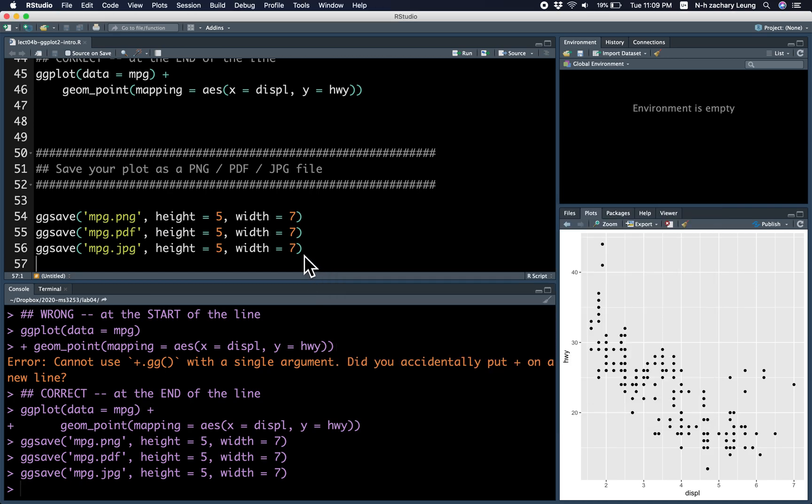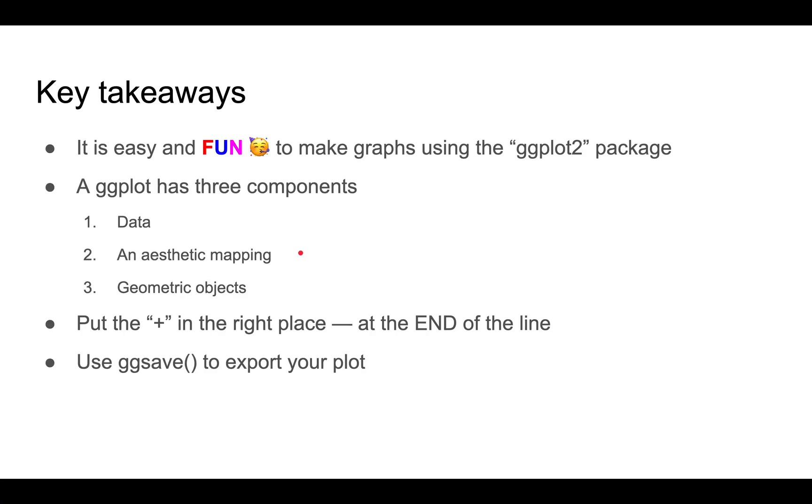All right. So to conclude, it's easy and fun. Well, I guess this part might be a little bit subjective, but I think it's pretty fun to make graphs using the ggplot2 package. And the ggplot has three components: the data, aesthetic mapping, and geometric objects. It's very important to put your plus in the right place, which is at the end of the line. And you can use the ggsave function to export your plots. That's all for now. See you next time. Bye.